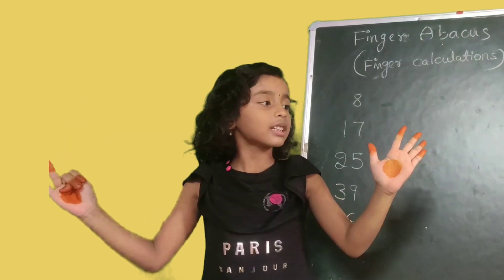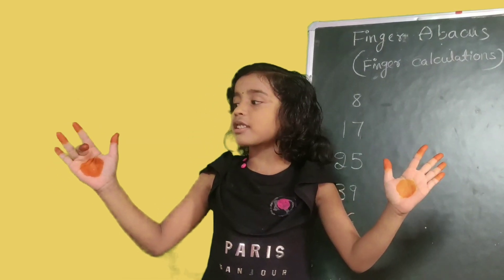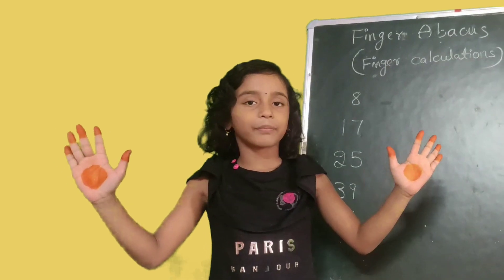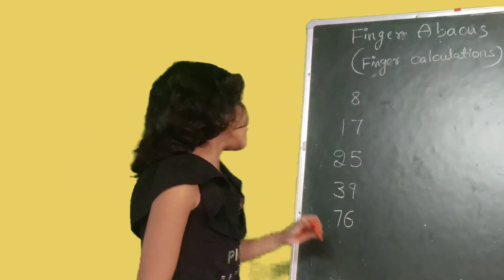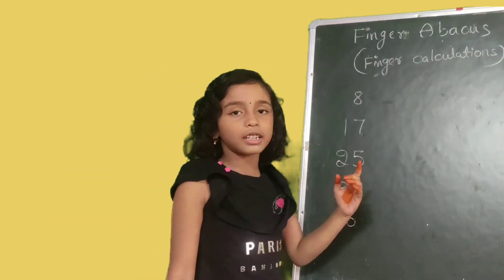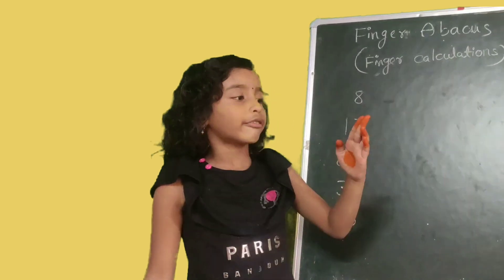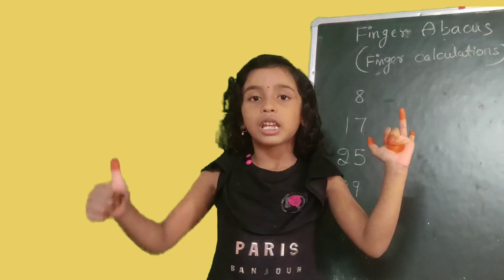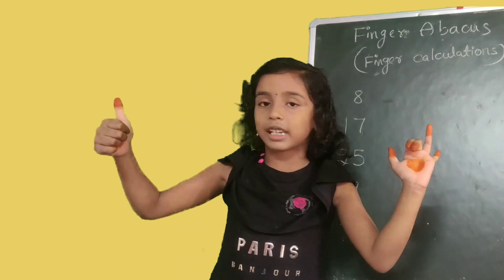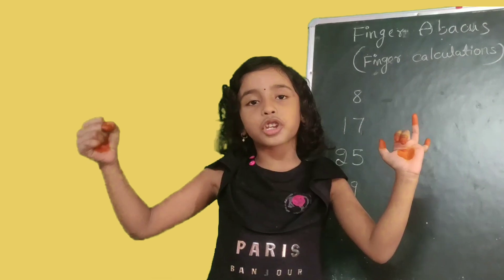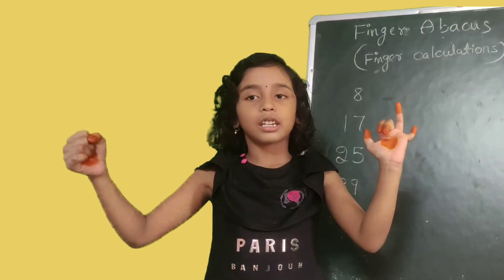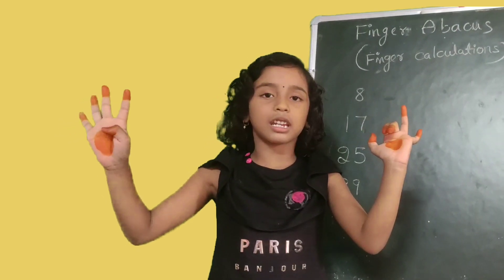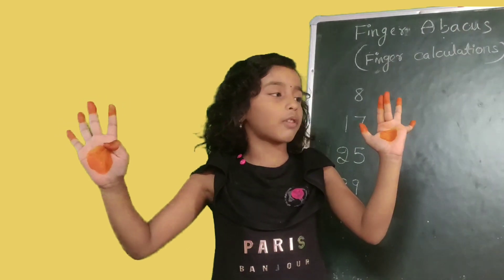Then 15, 16, 17. Then 25. Friends, this thumb finger value 5, I need close. Five, I need close. 25.